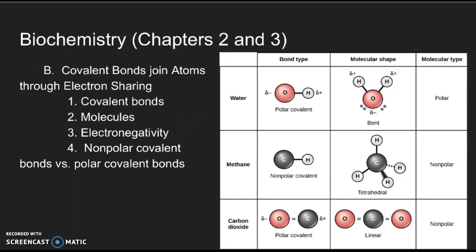There are three main types of bonds: covalent, ionic, and hydrogen bonds. While there are others, those are really going to be the main three that you're going to focus on.